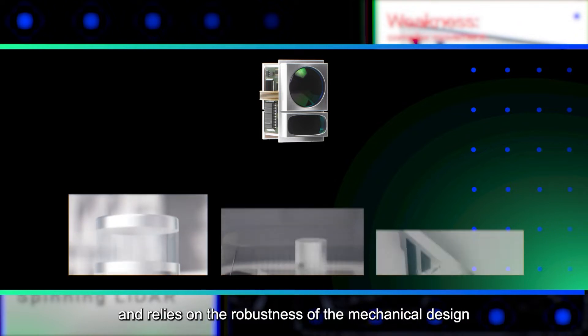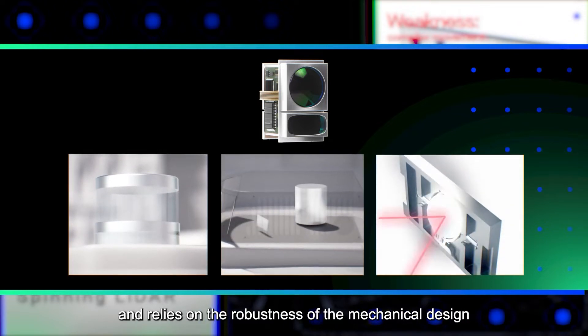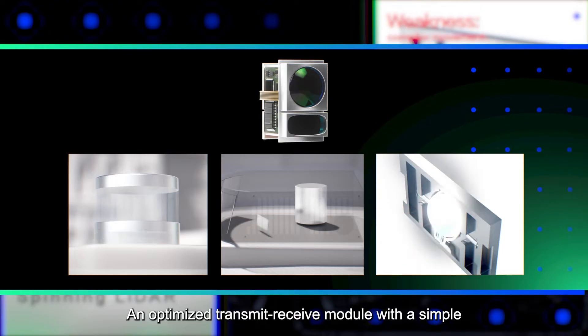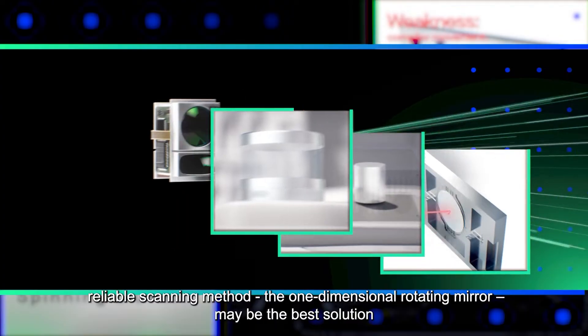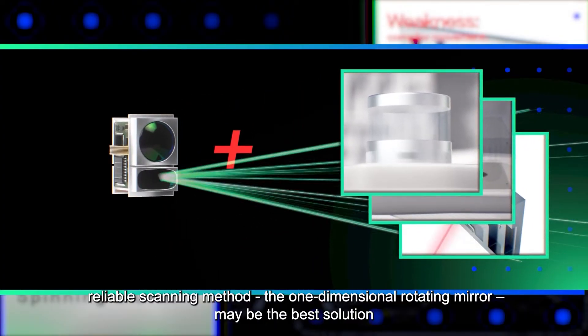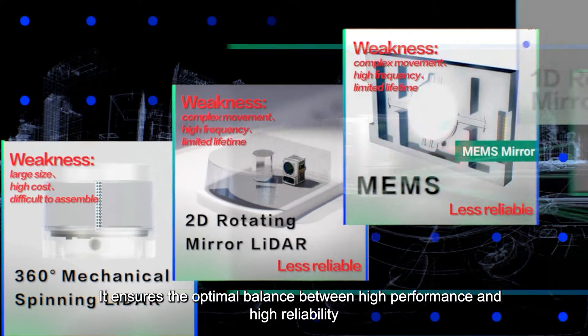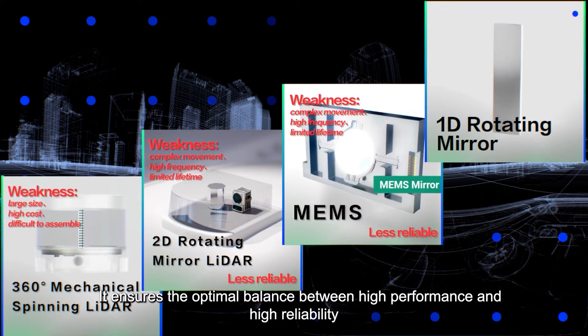While the scanning method affects a LiDAR's reliability and relies on the robustness of the mechanical design, an optimized transmit-receive module with a simple, reliable scanning method, the one-dimensional rotating mirror may be the best solution. It ensures the optimal balance between high performance and high reliability.